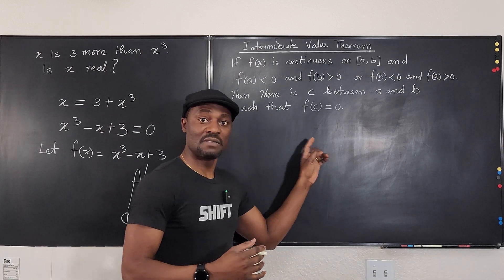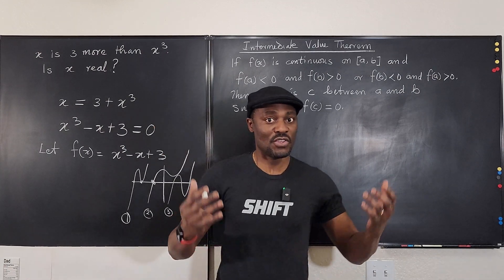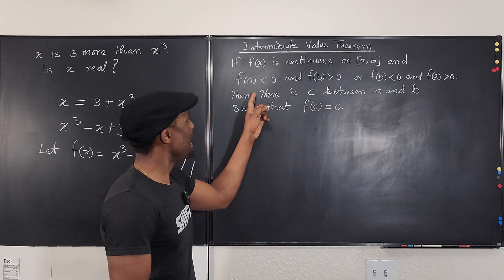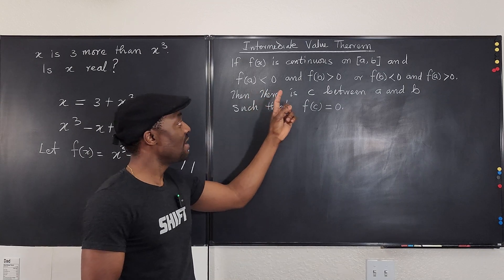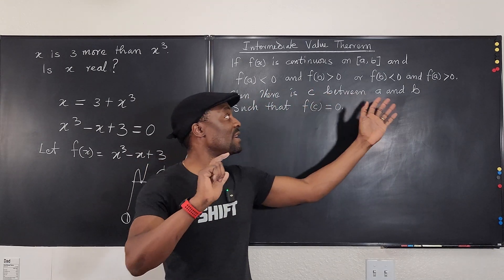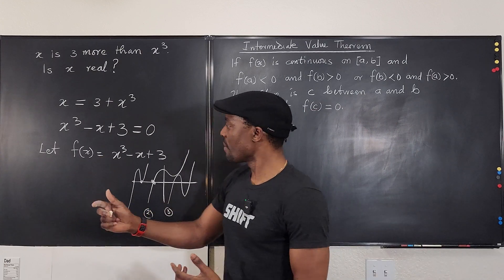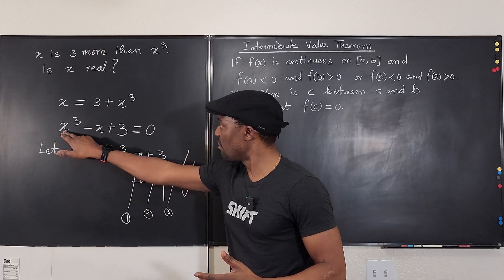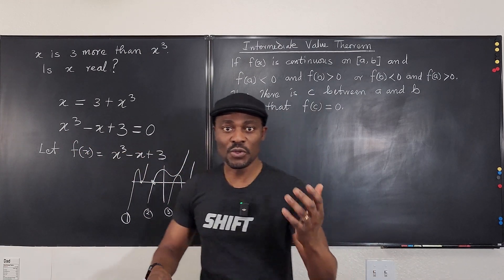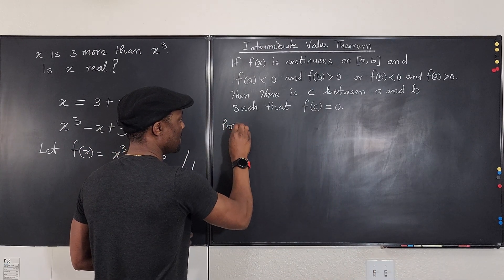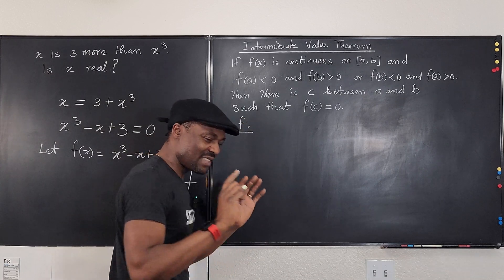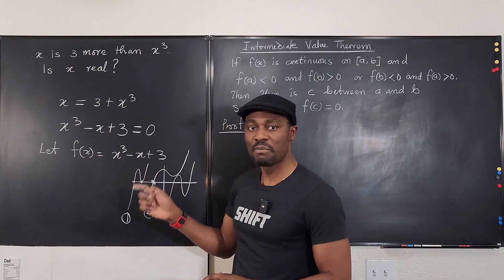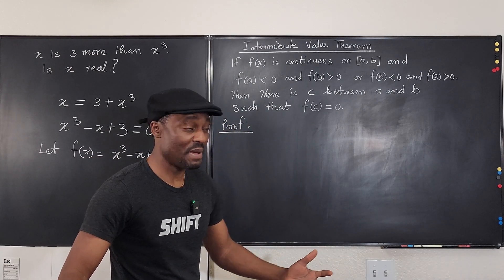So how do we use the Intermediate Value Theorem for it? Well, you now have to use your brain and say, I need to get a value that is negative and I need to get a value that's positive. It doesn't matter if it's coming from the other side or from this side. So what can I plug in here so I can get a negative value? What can I plug in to get a positive value? So this is how you show your proof. Okay, you're going to say this. The first thing is that this function here is a polynomial. Therefore, it is continuous on its domain.